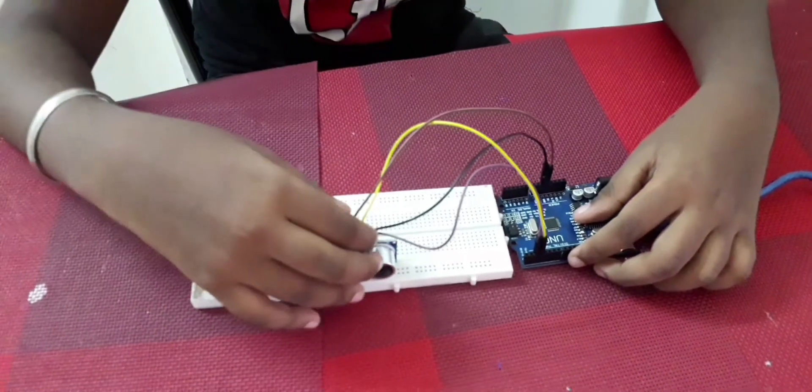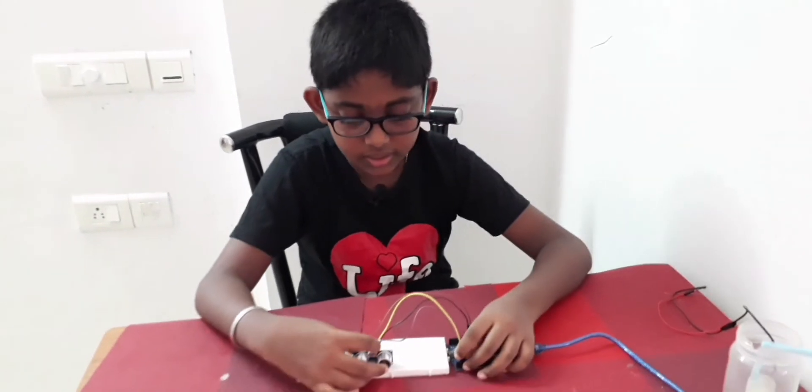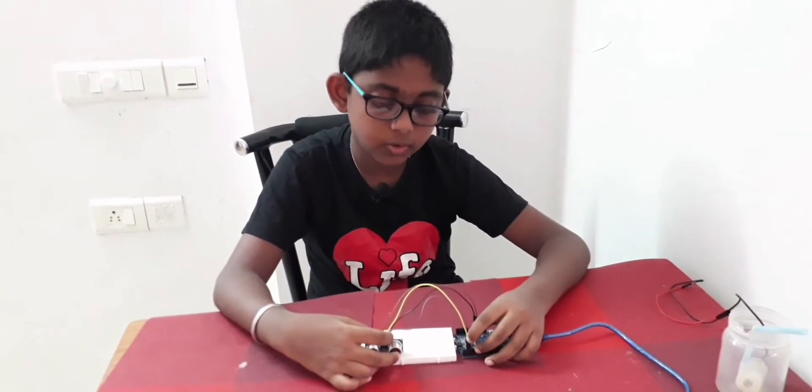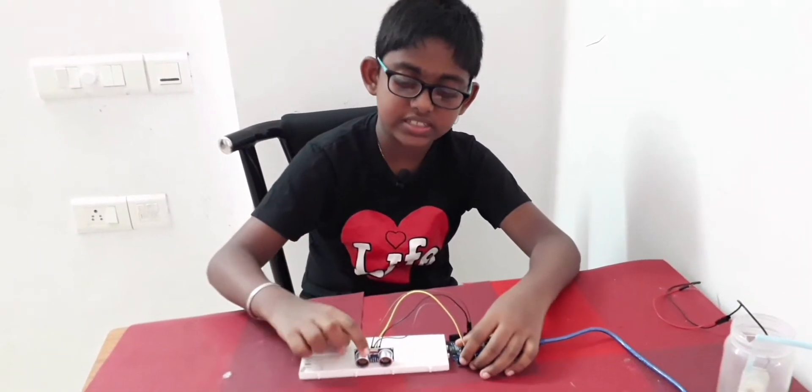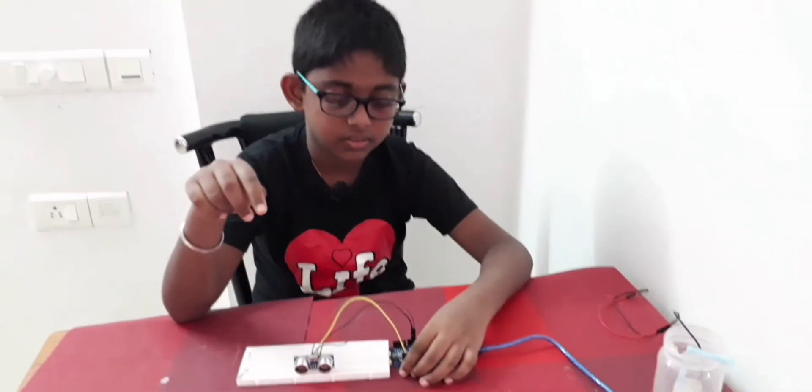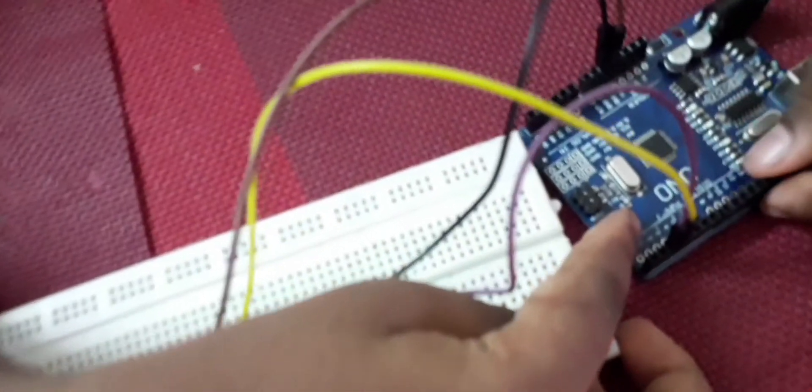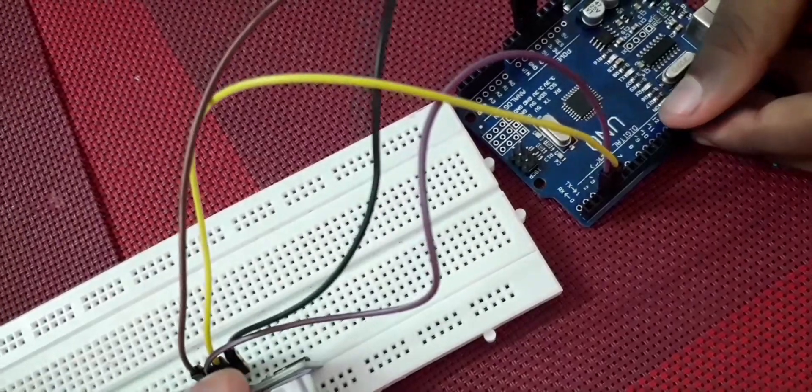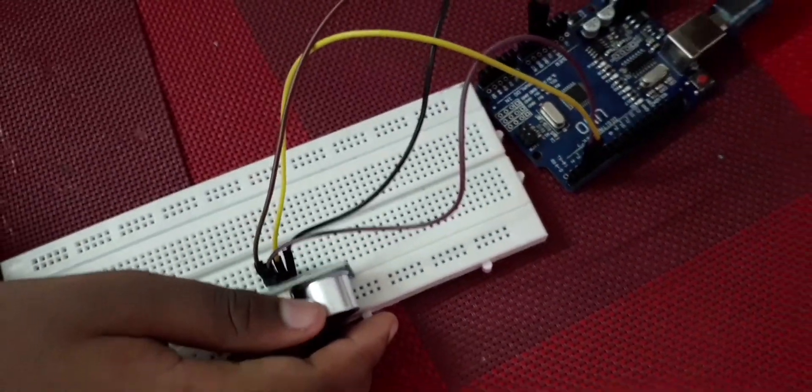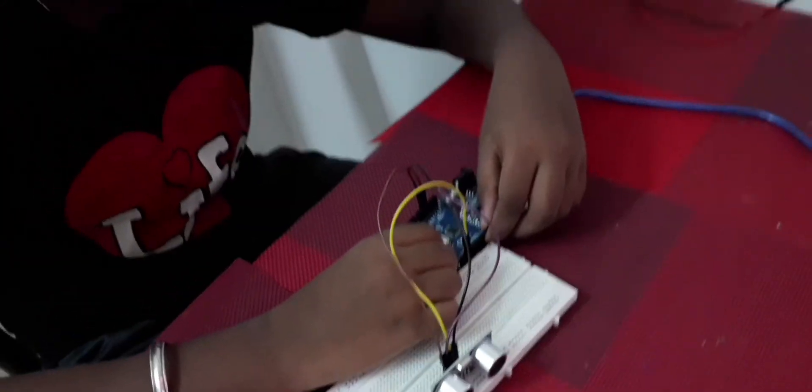So the reason I have connected echo in pin 3 and trigger in pin 2 is, echo pin is the pin which tells the distance. The distance of how far the sensor is from the object. So it will vary. Can you see this mark over here? In pin 3, in front of pin 3.